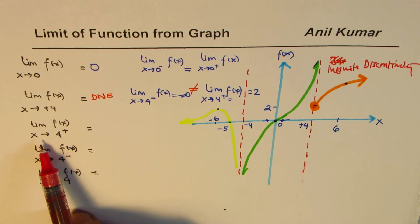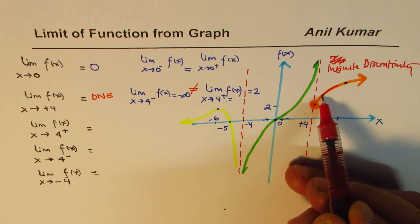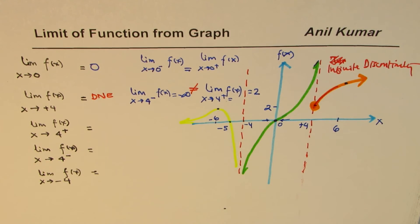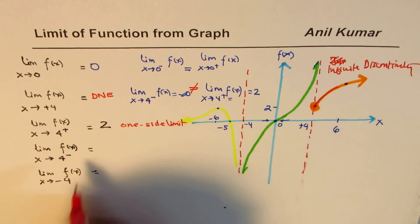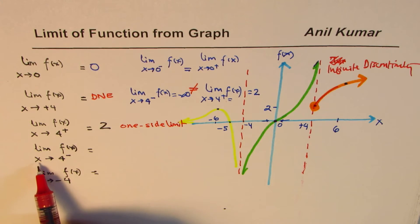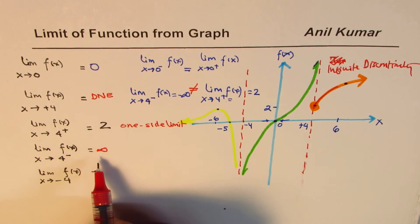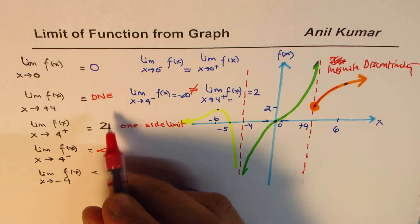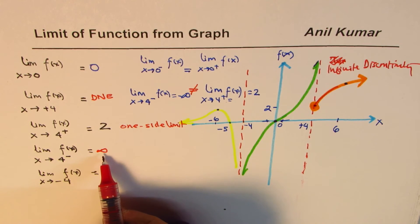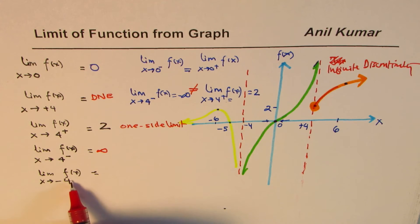The limit of f(x) as x approaches 4 from the plus side: we've just found it — when you approach 4 from the right you follow this path and reach the value 2. So this answer is 2 — the one-sided limit exists and equals 2. For the limit as x approaches 4 from the left side, we already found this was positive infinity. You may also write 'does not exist' since infinity is not a defined number, but we prefer to write infinity since it tells us which direction it is going.